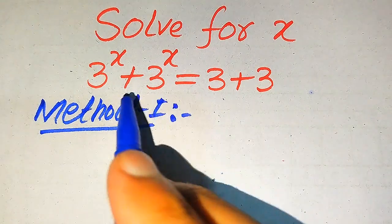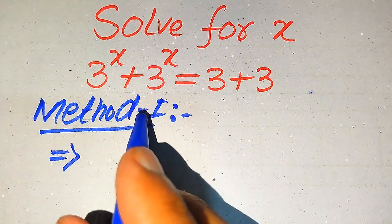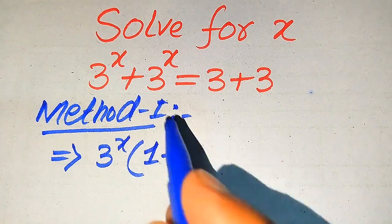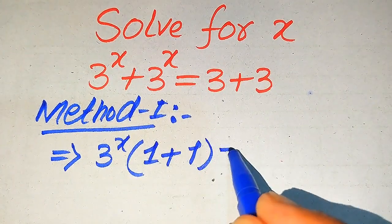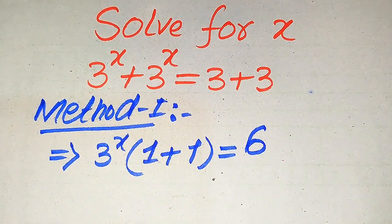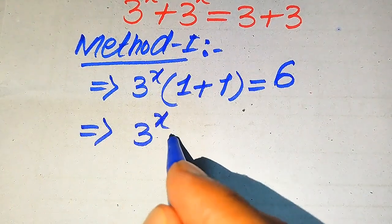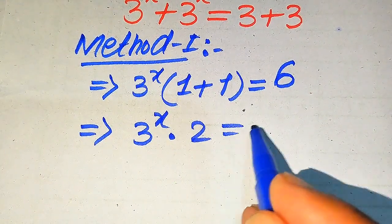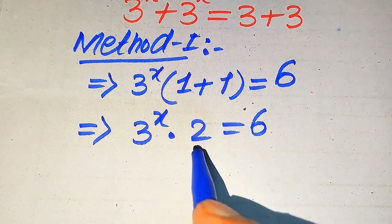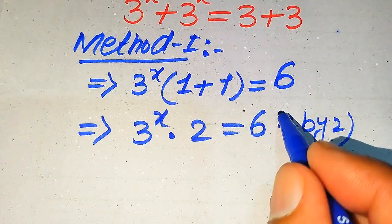In method one, you can see that 3 to the power of x is the common term. So first we take 3 to the power of x common on the left hand side. After taking common we get 3 to the power of x times 1 plus 1 equals 3 plus 3, which is 6. So we have 3 to the power of x times 2 equals 6. To solve for x we need to remove this 2 from the left hand side, so we divide both sides by 2.